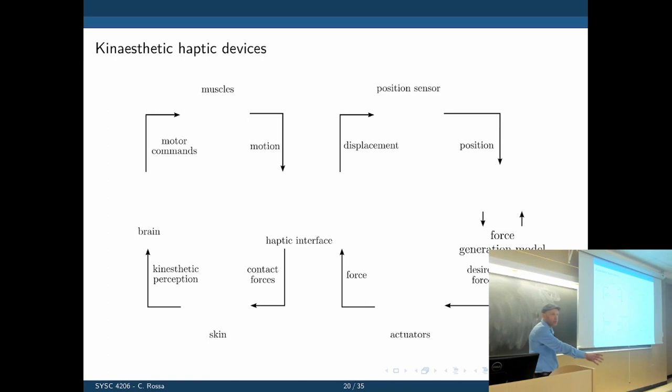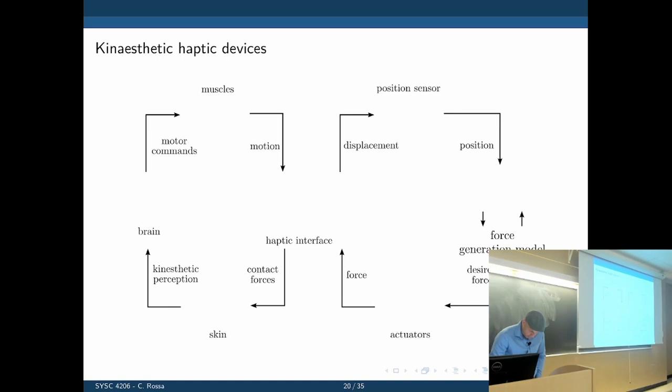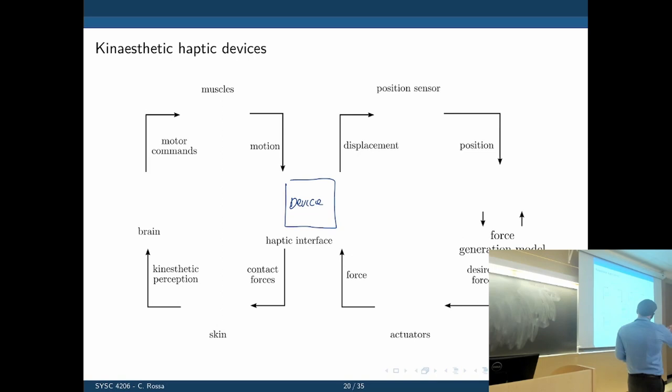The haptic interface has two ends: the user end and the controller end, with the haptic device in the middle. On the right side we have the controller, and on the left we have the operator.